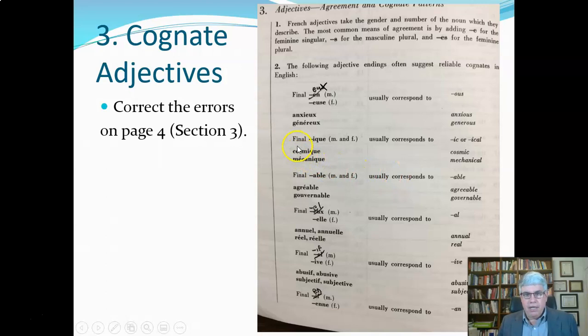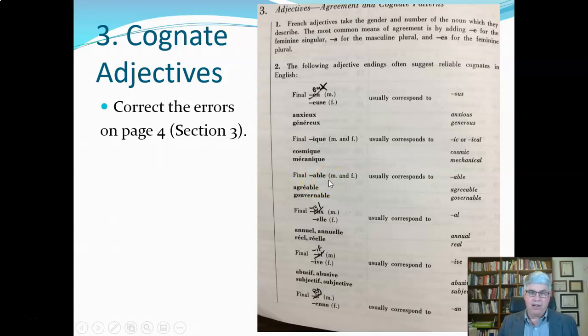If an adjective ends in I-Q-E — which is both the masculine and feminine ending — that usually corresponds to IC or ICAL. Like 'cosmique' is cosmic, and 'mécanique' is mechanic or mechanical. If a word ends in ABLE, that one's not hard to figure out — it corresponds to ABLE. For example, 'agréable' is agreeable, and 'gouvernable' is governable.